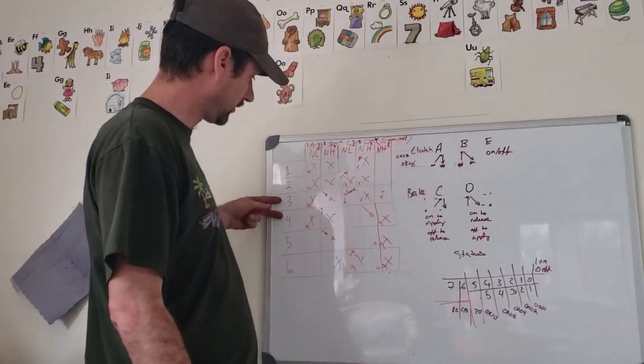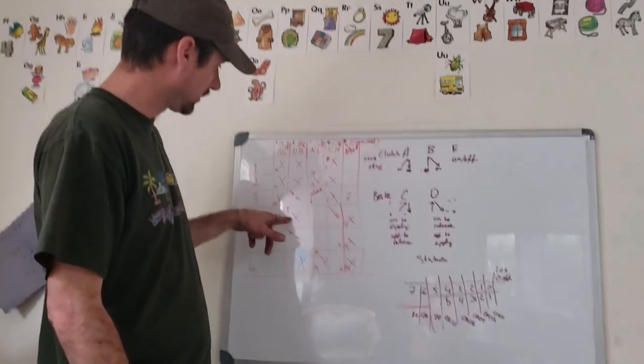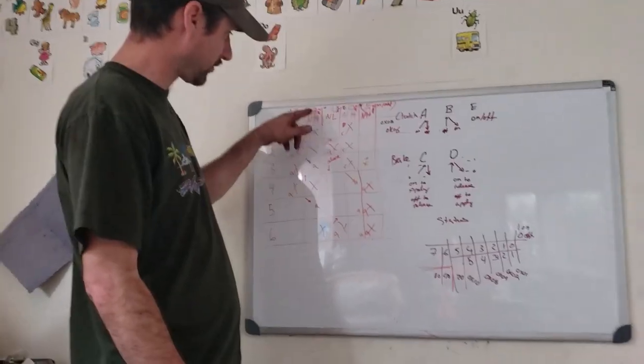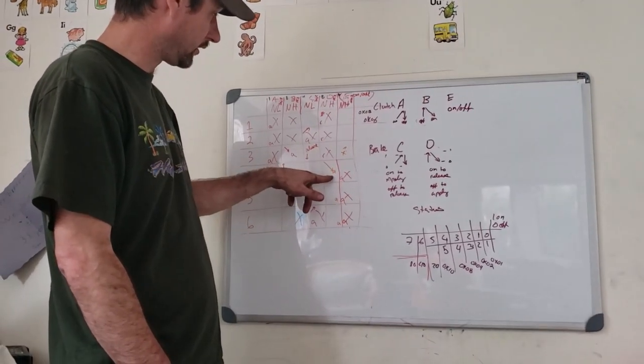And then 3-4 is pretty much this here because we're going to release. We're going to turn on shift solenoid B, which releases the clutch, and we're going to bring in this brake.